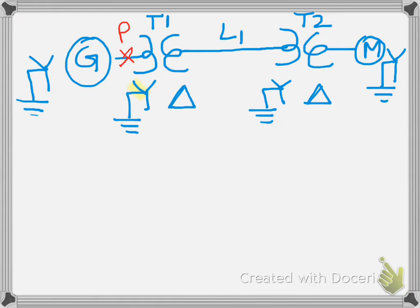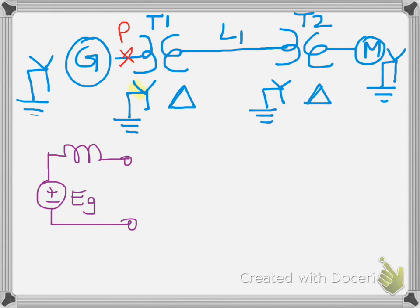Now we draw the per-phase equivalent positive sequence network. For the generator, the positive sequence network has a voltage source EG in series with the positive sequence reactance J·X_positive. For a transformer, the positive sequence network is simply a series impedance or reactance — this applies to both T1 and T2.